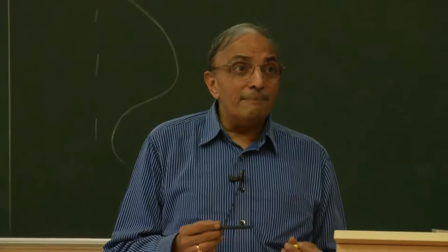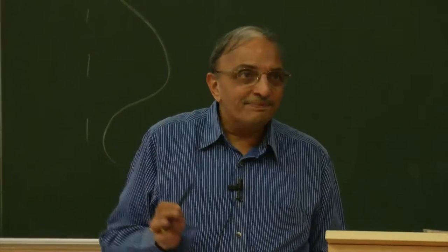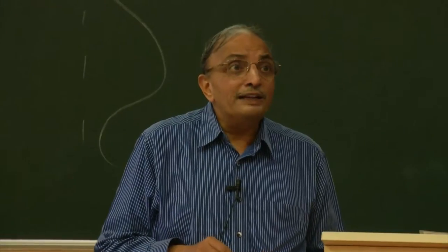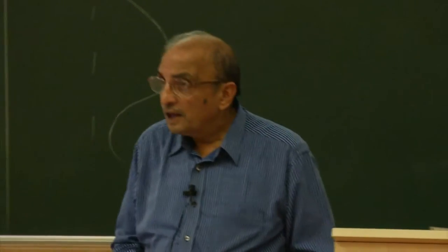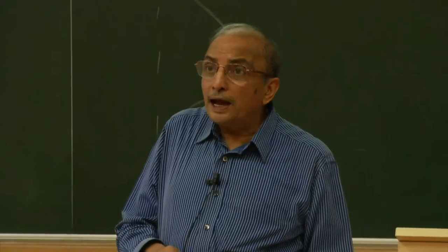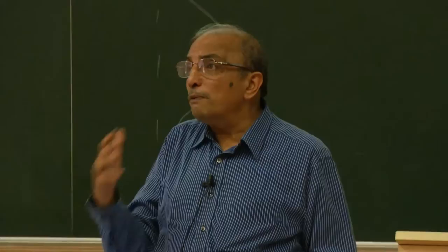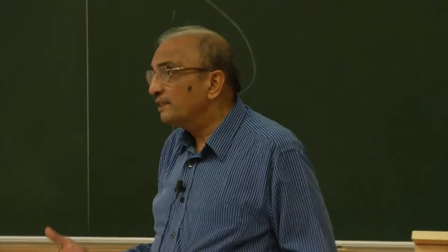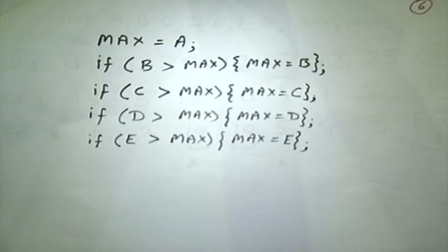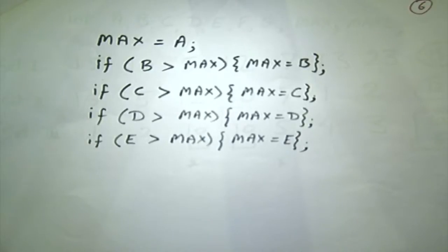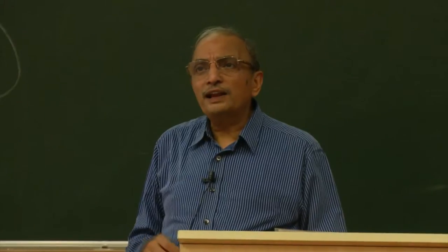Even if I give twenty-three numbers, it won't be a thousand-line program. Please remember to apply your common sense, with which you have been solving such problems in life. Here is a solution — do you agree this will solve the problem? And do you agree this has no complex logic? And that this can be extended for any number of numbers?